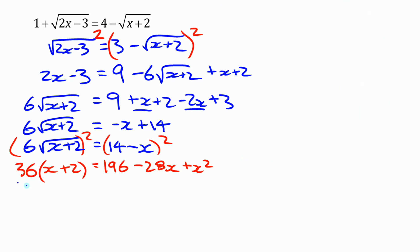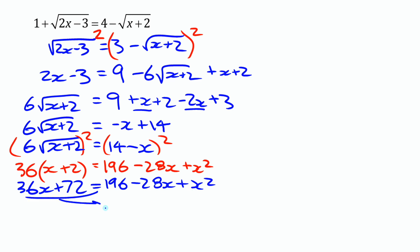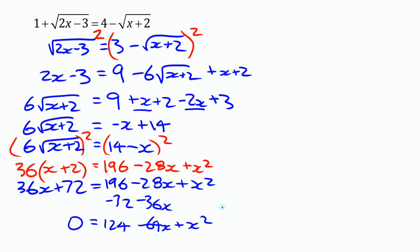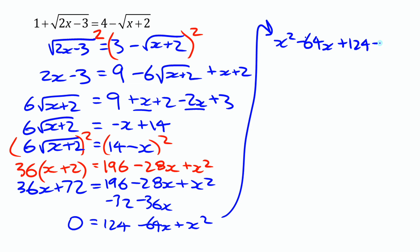Continuing: 36x plus 72 equals 196 minus 28x plus x squared. This is a quadratic that we'll solve by factoring or the quadratic formula. Moving terms to one side: subtracting 36x and subtracting 72 gives x squared minus 64x plus 124 equals zero.